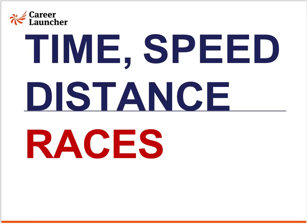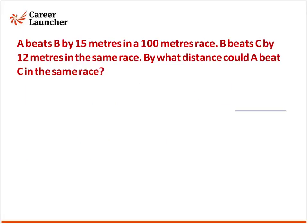Let's directly jump on to the first question and after that we'll see the concepts of races in detail. This is a very general question on races: A beats B by 15 meters in a 100 meters race, and B beats C by 12 meters in the same race. So, A ne C ko kitne distance se beat kiya hoga? Let's first understand how these questions are approached.